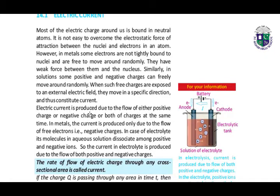Electric current is produced due to the flow of either positive charge or negative charge, or both charges at the same time. In case of metals, the current is produced only due to the flow of free electrons, which we call the negative charges. In case of electrolyte, its molecules in a solution dissociate into positive and negative ions.